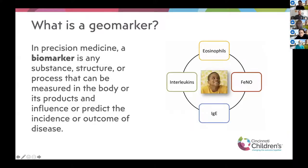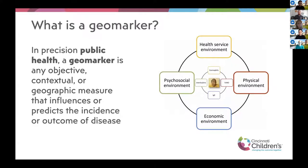You might be wondering, what is a geomarker? This term comes from another term in precision medicine that you may have heard of — biomarker — which is basically anything in the body that can be measured and then used to influence or predict the incidence or outcome of disease. Similarly, in precision public health, we use the term geomarker, which is any objective, contextual, or geographic measure that influences or predicts the incidence or outcome of disease.